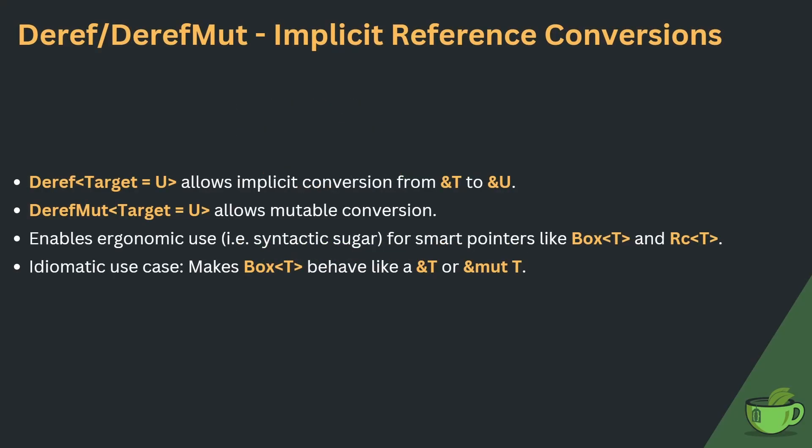Our final trait today, Deref, also has a brother called DerefMut. Both of them have an associated type Target, which allows implicit conversion from a reference to T to a reference to U, where U is the target type. Both of these traits allow ergonomic use — syntactic sugar — for smart pointers like Box<T> and Rc<T>, which is a reference-counted smart pointer. An idiomatic use case is that it makes a Box<T> behave like a reference to T or a mutable reference to T. And that about wraps up our deep dive into Rust's conversion traits.